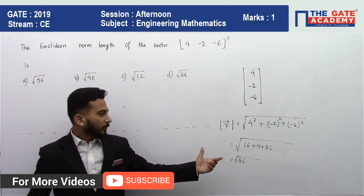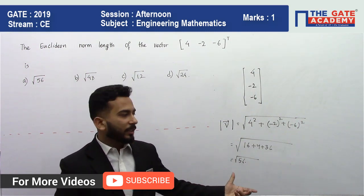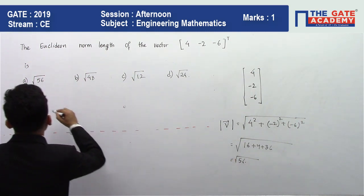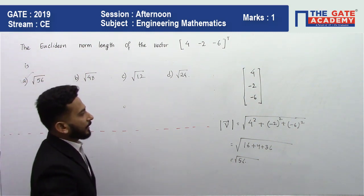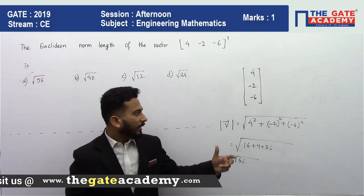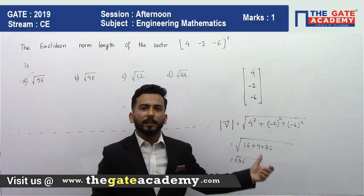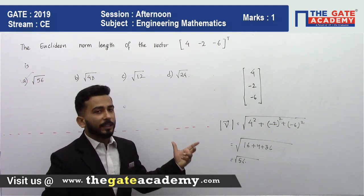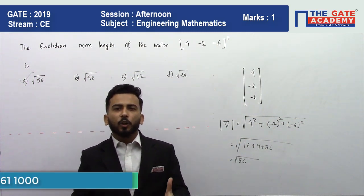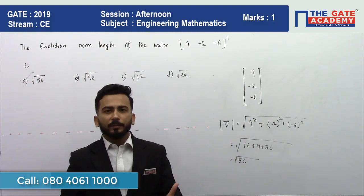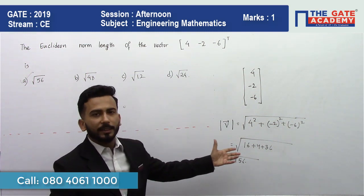So again, it's a formula-based question - √56, that means A is your correct answer. Directly you can use this formula and reach the answer. It's a topic from linear algebra, a slightly uncommon topic, but if you just know the formula you can directly do it.